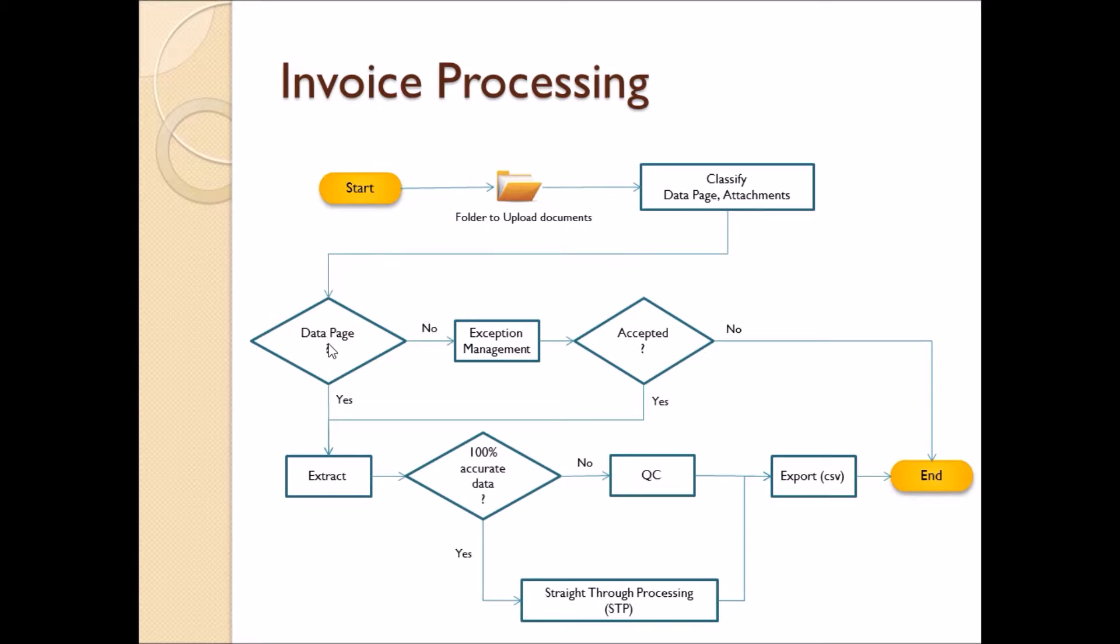If it's a data page, then do the intelligent data extraction using selected OCR engine and algorithm. If it's not a data page, route it to exception stage where the page needs to be double-checked whether it's a data page or attachment. If a data page, routed back to extraction stage, then extraction happens on the data pages.